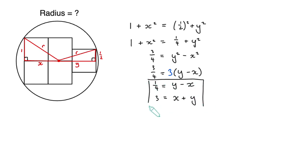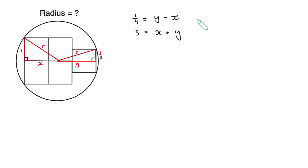As a result we get a pair of linear simultaneous equations for x and y which are now quite easy to solve. You can do this in a variety of ways, but one way is just to add the two equations together. That would give us three and a quarter equals two y, and the x and the minus x would cancel out.